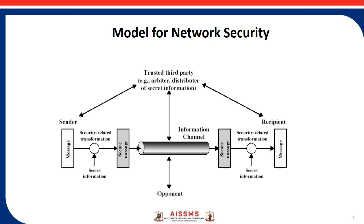This is a model of network security. When considering the place of encryption, it is useful to use two models. The first model, illustrated in the figure, shows information flowing over an insecure communication channel in the presence of a possible opponent. An appropriate security transformation — that is, an encryption algorithm — can be used with suitable keys, possibly negotiated using the presence of a trusted third party. When sending data from the source site to the destination site, a transfer method like the internet or another communication channel is used.